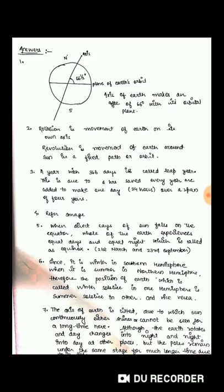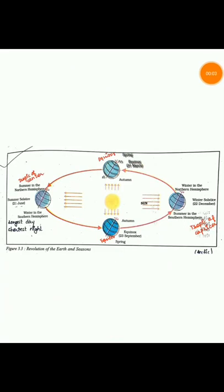Now, moving on to the next question: difference between summer solstice and winter solstice. Let's focus on this image here to understand. 21st June is summer solstice, while 22nd December is winter solstice. On summer solstice, sun's direct rays fall on tropic of cancer in northern hemisphere at 23 and a half degrees. This results in longest day and shortest night in northern hemisphere.